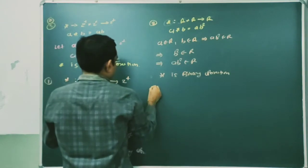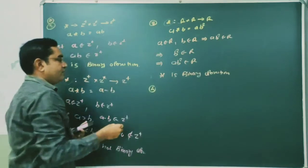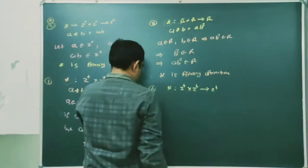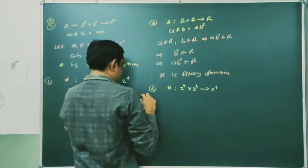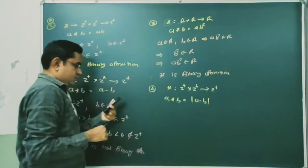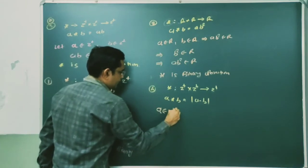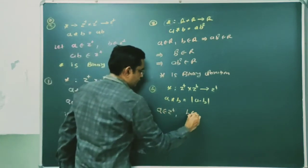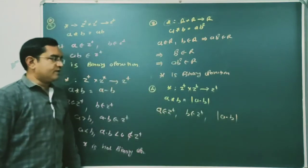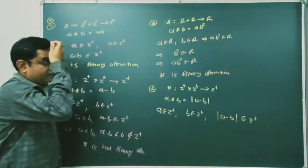Fourth question: a binary operation star on Z+ is defined as a★b = |a − b|. We have to check whether this is a binary operation or not. If a ∈ Z+ and b ∈ Z+, taking subtraction of both positive integers and then taking modulus will always give us a positive integer, so it seems it belongs to Z+.